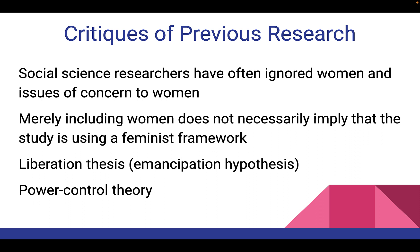The liberation thesis, also called the emancipation hypothesis, attempts to link women's liberation with crime — basically the argument that if a woman commits crime, she's acting too much like a man. The idea is that women couldn't commit white-collar crime when they weren't allowed to work in white-collar industries, so there's an increased opportunity now. Rita Simon in 'Women in Crime' (1975) said only property crime rates among women would increase due to the women's liberation movement, while violent crime rates would decrease because women's frustration would lessen as opportunities in employment and education opened up.